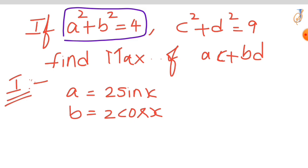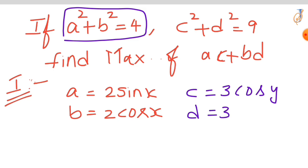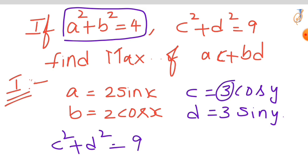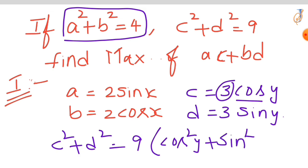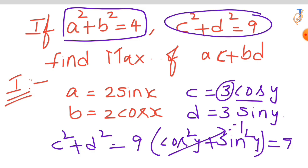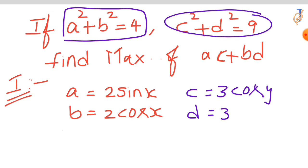Similarly, assume c equal to 3 cos y and d equal to 3 sin y. If you do c² plus d², you will get 9 times (cos²y plus sin²y). Since cos²y plus sin²y equals 1, so 9 times 1 is 9, which is the same as our given equation. That's why we assumed c equal to 3 cos y and d equal to 3 sin y.